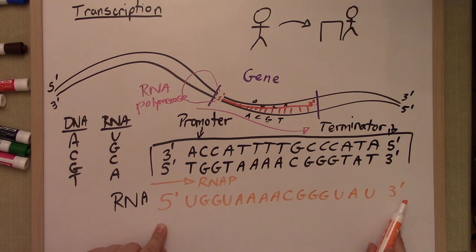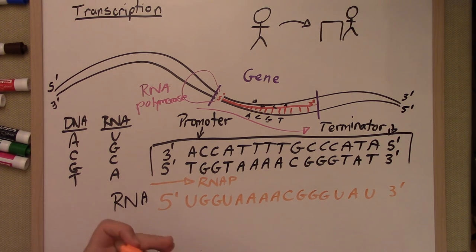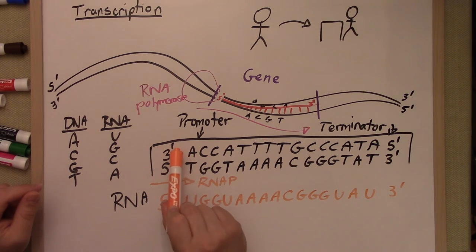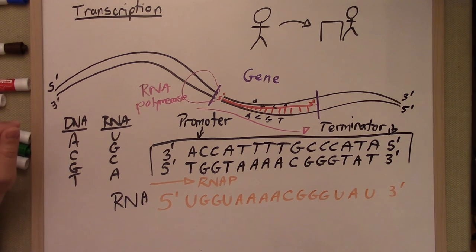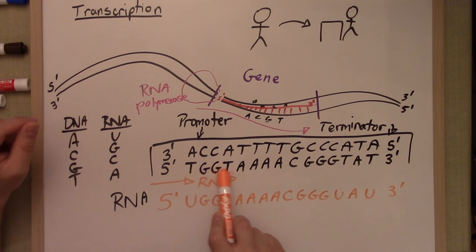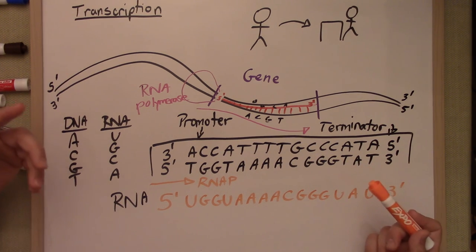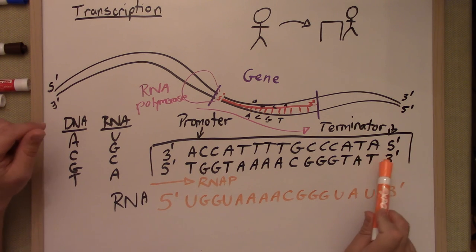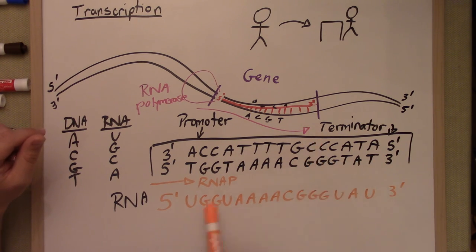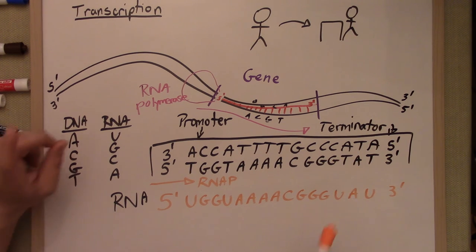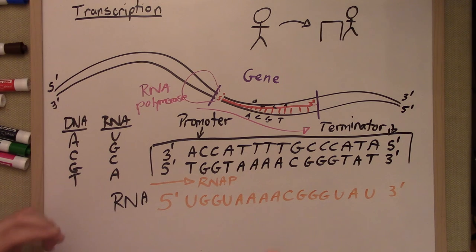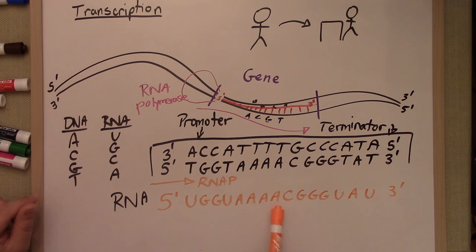Notice two things. First, the RNA is complementary to the three-to-five strand — that's hopefully how you did it. But you might also notice that it has the same information as the five-to-three strand. That makes sense because the three-to-five and the five-to-three have complementary bases to each other. So if you do a complementary match to the top strand, it should be the same as the bottom strand except for the T and U swap. Everything else should be the same.